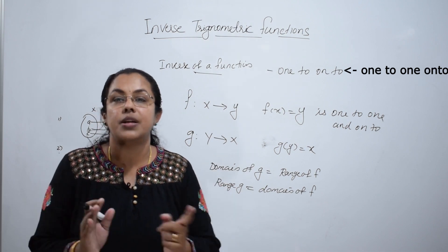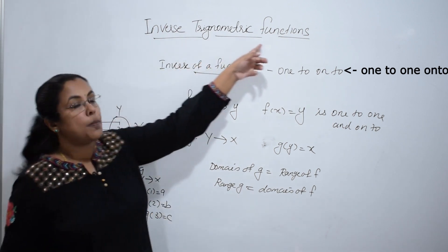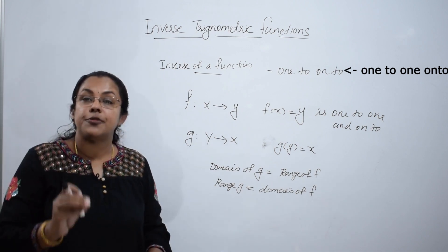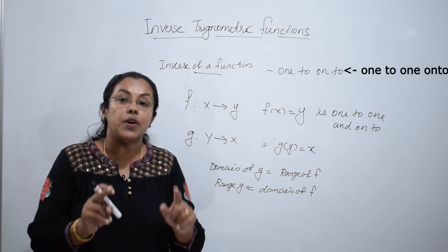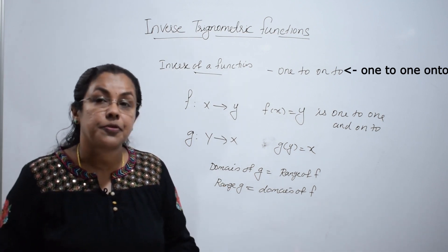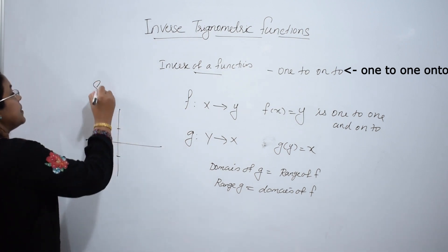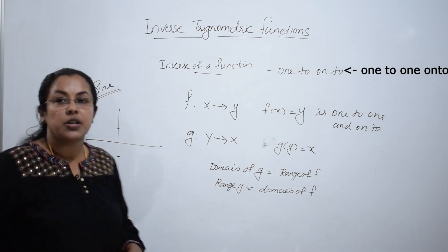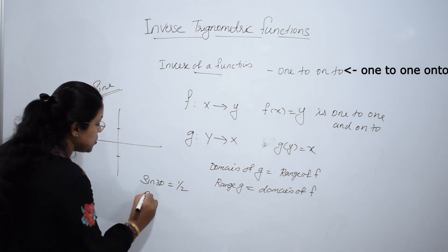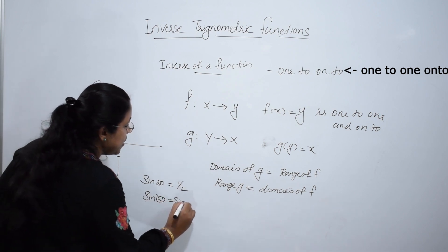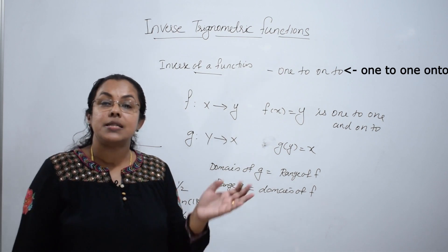That is the basic condition for a function to be invertible. Now, for a trigonometric function to be invertible, it must be 1 to 1 and onto. But what about trigonometric functions? If you remember from last year, I am explaining the trigonometric function sine.